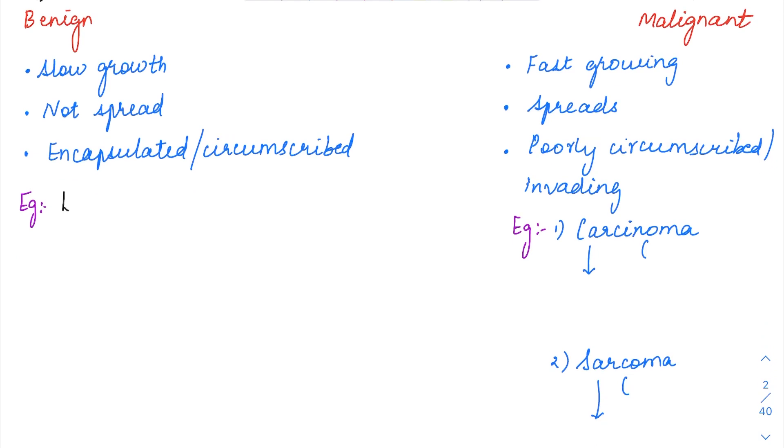Examples of benign tumors include lipoma, which is a benign tumor arising from the fatty adipocytes tissue. Then leiomyoma, a benign tumor arising from the smooth muscle.